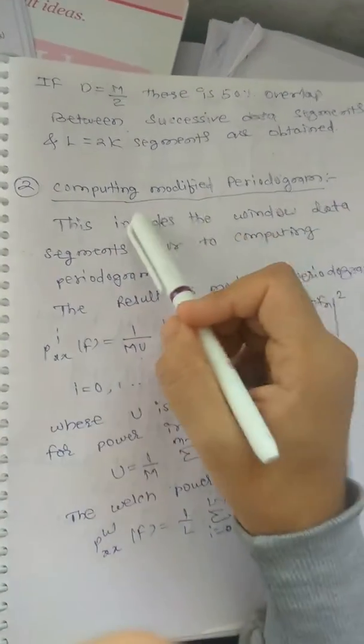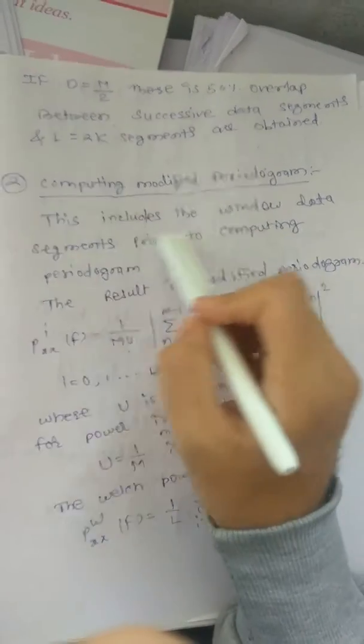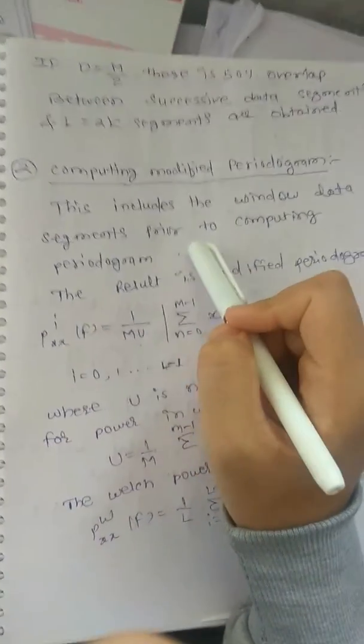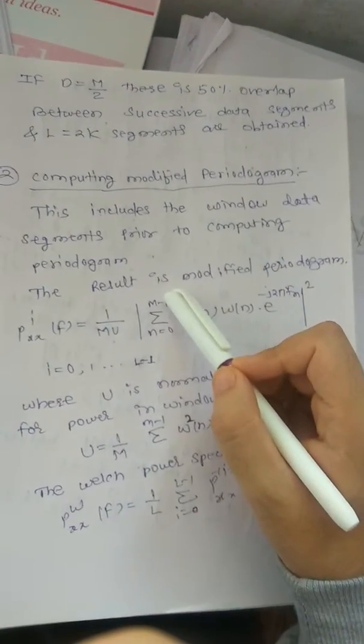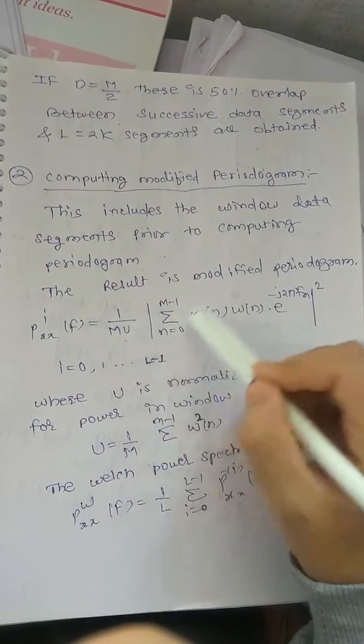Computing modified periodogram includes the windowing of data segment points prior to computing periodogram. The result is modified periodogram upon mu.